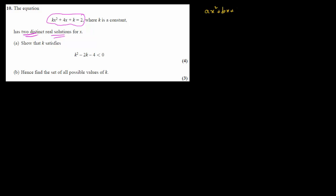We have an equation and what we have to do is show this expression. What they are saying is that this particular quadratic equation has two distinct real solutions. Remember, a quadratic equation looks like ax squared plus bx plus c equals to 0. In order to make it look like an actual quadratic equation, we have to send the 2 to the other side. So this would be kx squared plus 4x plus k minus 2 equals to 0.